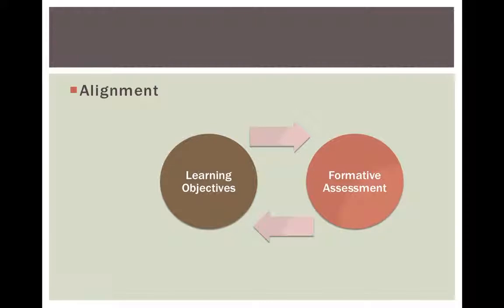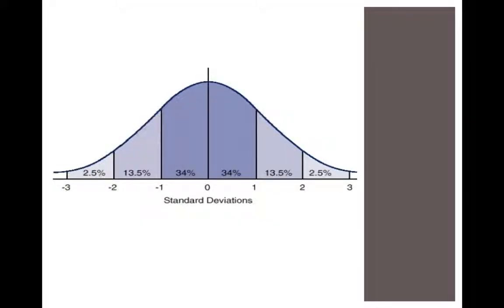I want to take a moment to talk about two more types of assessments. One is a normative assessment — these are usually your SATs and GREs and the like. The purpose of these tests is to measure variance among all of the participants taking the test. They like to see some students get it right and some students get it wrong, and they want to see that range typically called the bell curve.